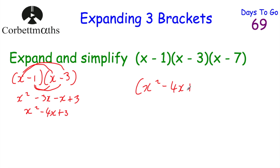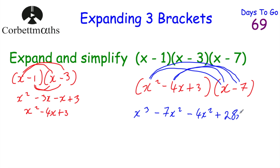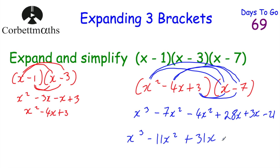Now replacing the first two brackets with (x² − 4x + 3) and multiplying by (x − 7): x squared times x is x cubed; x squared times minus 7 is minus 7x squared. Minus 4x times x is minus 4x squared; minus 4x times minus 7 — negative times negative is positive — is plus 28x. Then 3 times x is plus 3x; 3 times minus 7 is minus 21. Collecting like terms: x cubed; minus 7x² minus 4x² gives minus 11x²; 28x plus 3x gives plus 31x; and minus 21. Final answer: x³ − 11x² + 31x − 21.